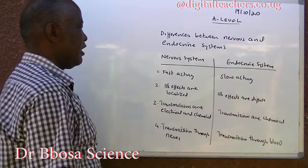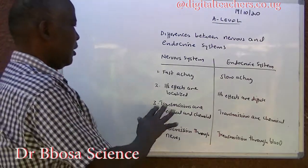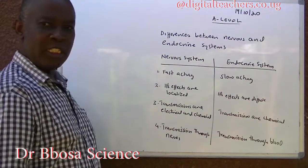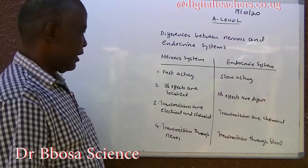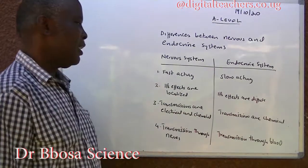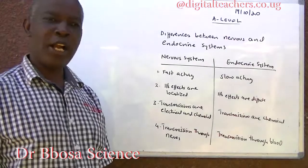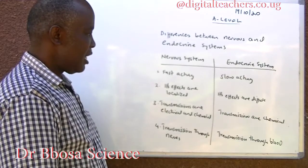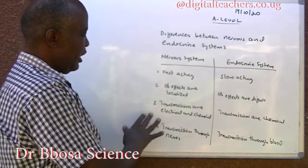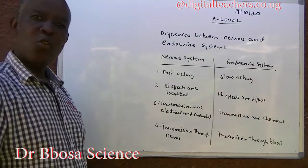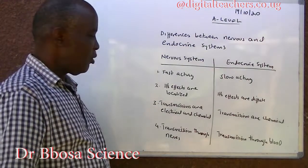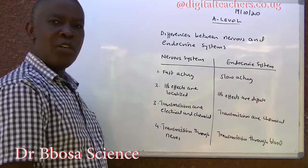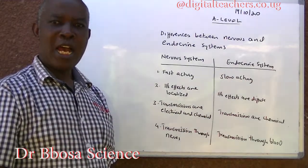The nervous system is fast acting. The endocrine system is slow acting. In the nervous system, effects are localized. In the endocrine system, effects are diffuse. In the nervous system, transmission is both chemical and electrical. In the endocrine system, transmission is chemical only.